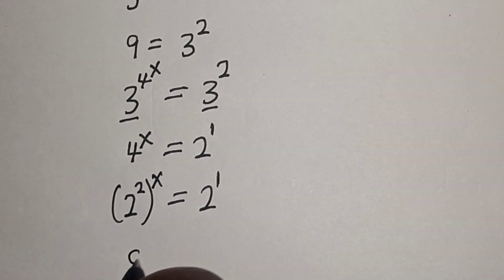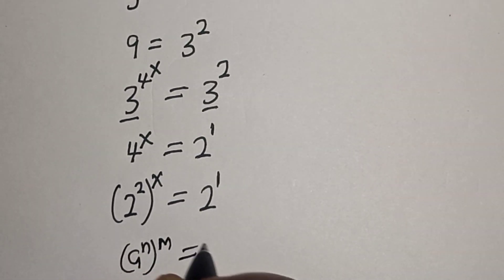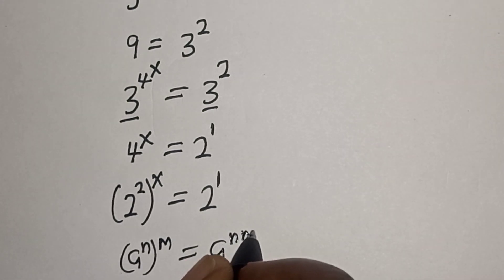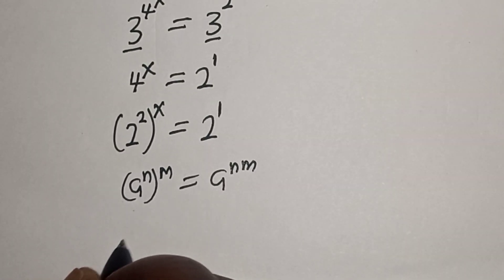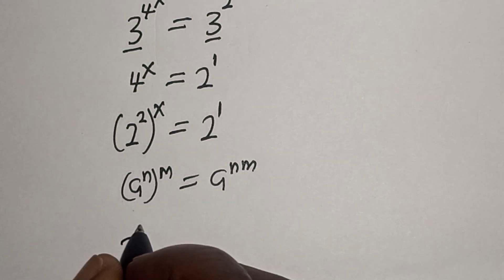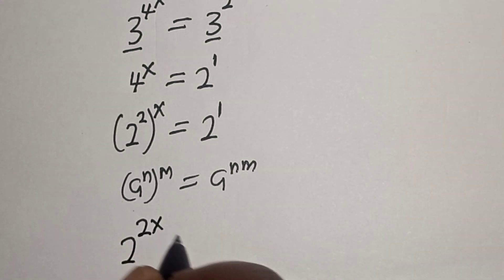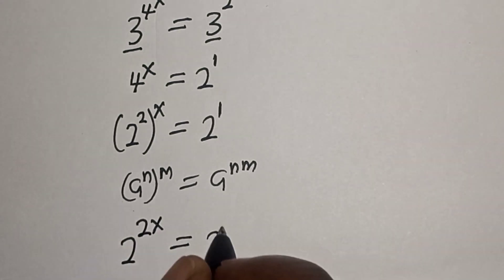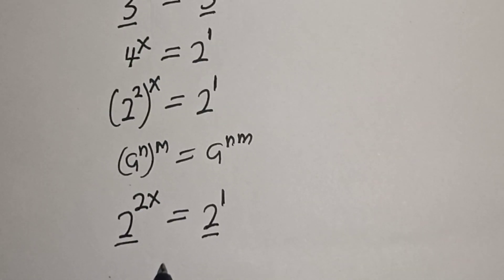Using the rule: a raised to power n raised to power m equals a raised to power n times m, this becomes 2 raised to the power of 2x equals 2 raised to the power of 1. They have the same base 2.